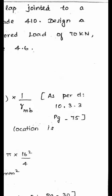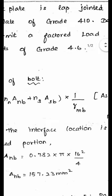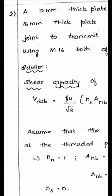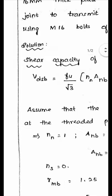The grade of bolt is given as 4.6. First, calculate the strength of one bolt — that is the bolt value — which should be the least of the shearing capacity and the bearing capacity of the bolt. Once the strength of one bolt is calculated, the number of bolts can be easily obtained by dividing the total load by the strength of one bolt.